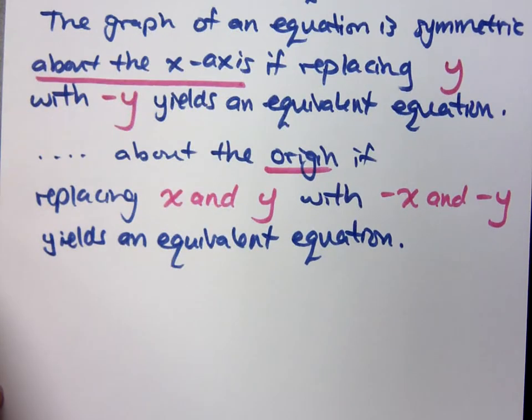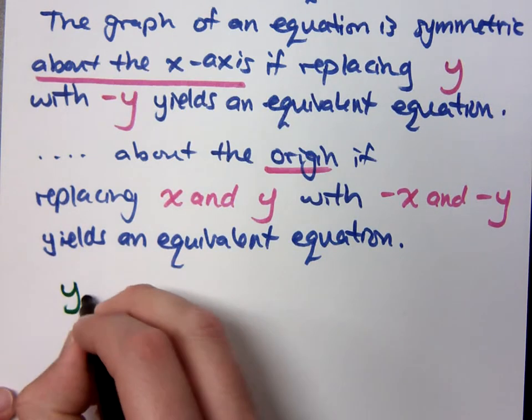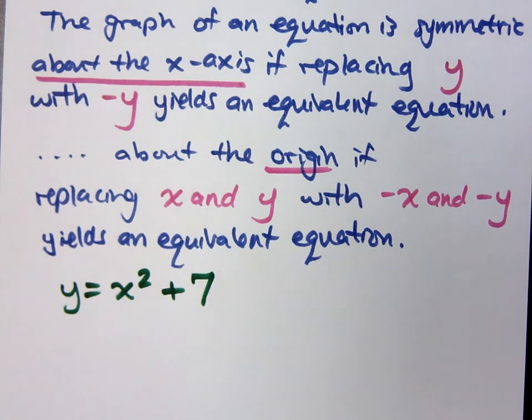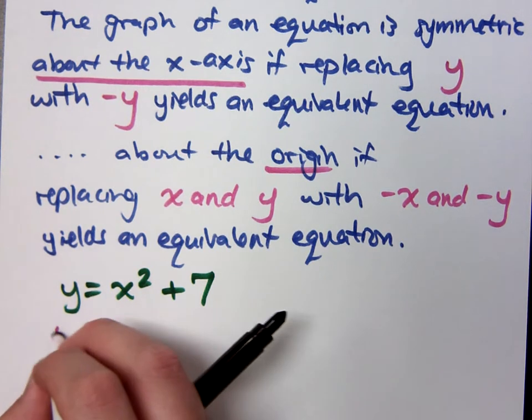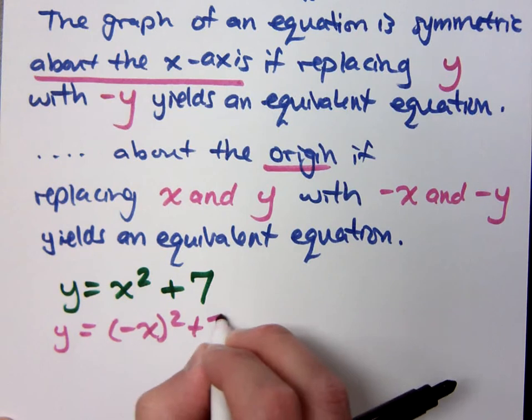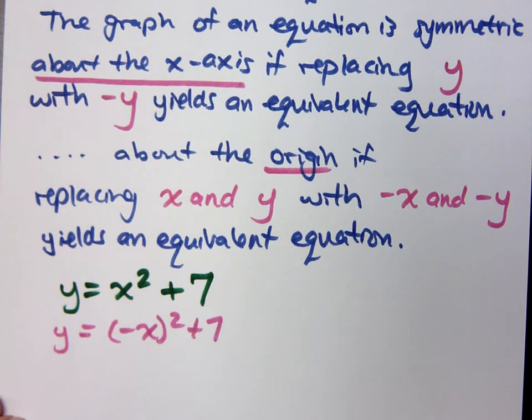A few quick examples for you. If I have y equals x squared plus 7, let's talk about its symmetry. If I replace x with negative x, what happens here? What does this guy become?